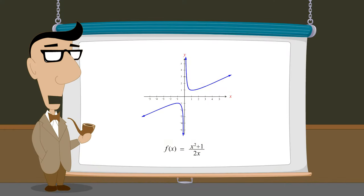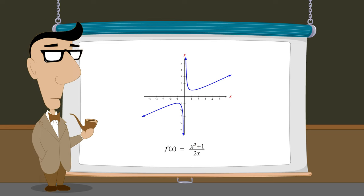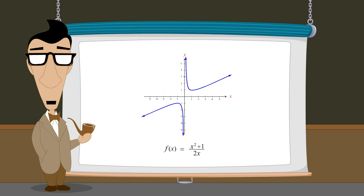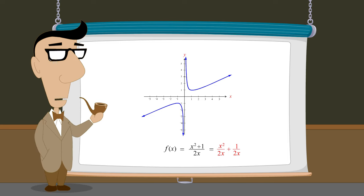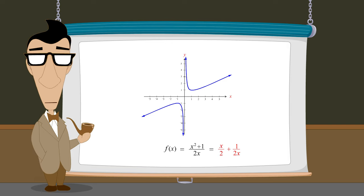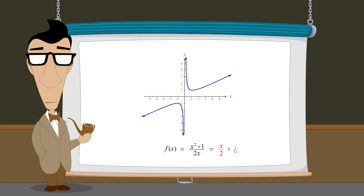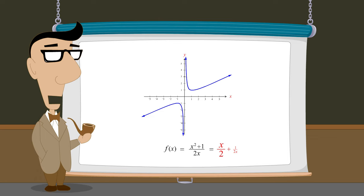So when the largest exponent of a rational function's numerator is greater than the largest exponent of its denominator, its oblique or curvilinear asymptote can be determined by dividing the numerator by the denominator. This produces an equivalent form of the function written as the sum of one or more terms. Once these terms are reduced to their simplest form, any terms containing x in the denominator will approach zero for large values of x, and so the remaining terms will describe the function's oblique or curvilinear asymptote.